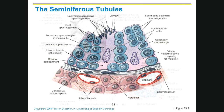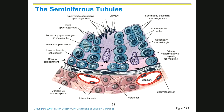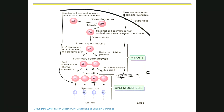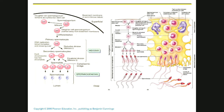If we blow up the diagram: spermatogonia become primary spermatocytes, which undergo a division to become secondary spermatocytes, which undergo another division to produce spermatids. These are sometimes called early spermatids. But look at them—they don't look anything like sperm. They're round. So we have to take these round cells and turn them into cells that look like sperm. That's the second part of the process: spermiogenesis.